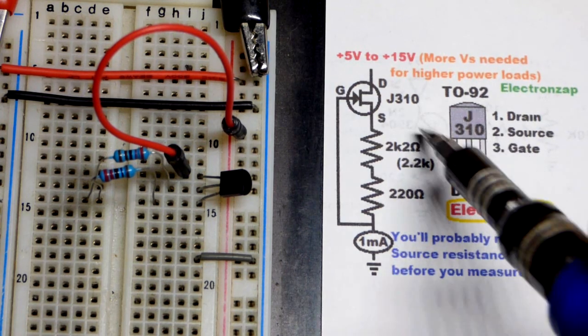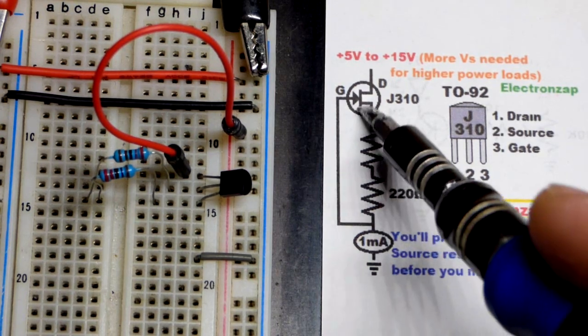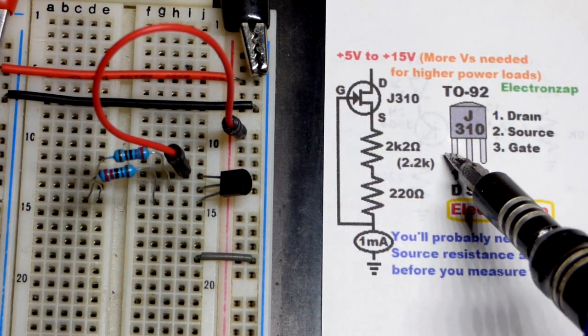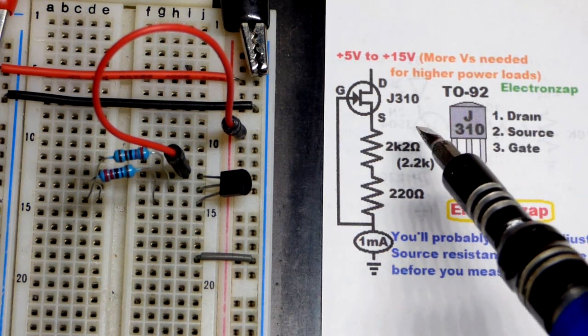As we saw with the J310, we can set how much current is flowing through the transistor. It's a junction field effect transistor, a JFET, an N channel depletion mode.